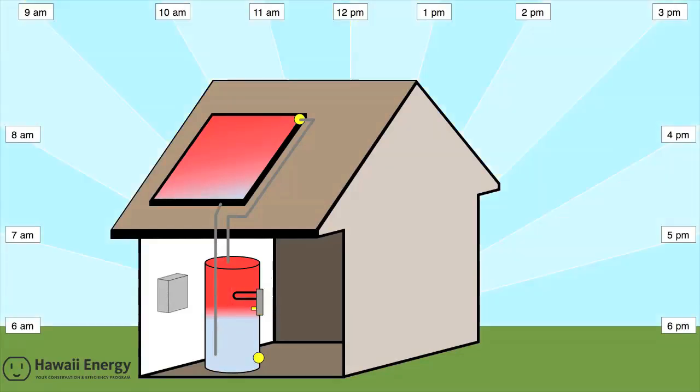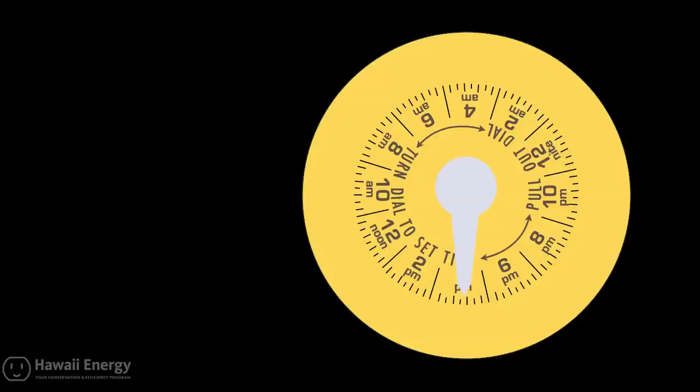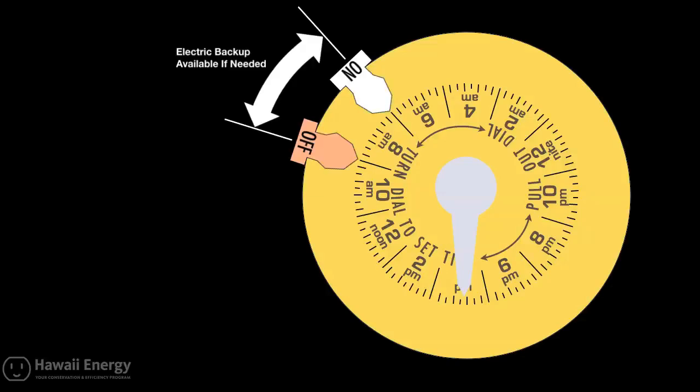Typically, there are two times during the day which might require some electric backup to heat water. One is in the early morning prior to the solar day, and the other is in the late evening. To ensure a hot shower in the early morning, you can fasten an on-tripper at 5 a.m. and an off-tripper at 7 a.m. If you need to guarantee hot water in the late hours, you can fasten an on-tripper at 4 p.m. and an off-tripper at 5 p.m.